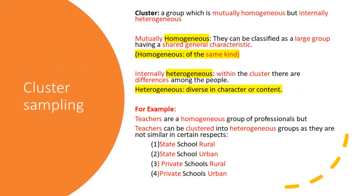The last random sampling method we are going to consider is cluster sampling. A cluster means a group which is mutually homogeneous but internally heterogeneous. Mutually homogeneous means they can be classified as a large group having a shared general characteristic — homogeneous means of the same kind. Internally heterogeneous means that within the cluster there are differences among the people.